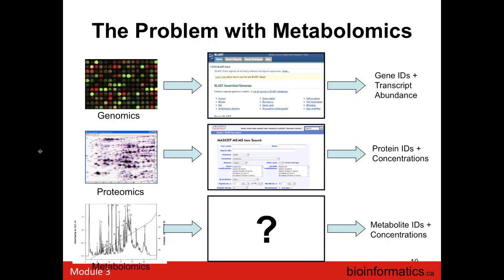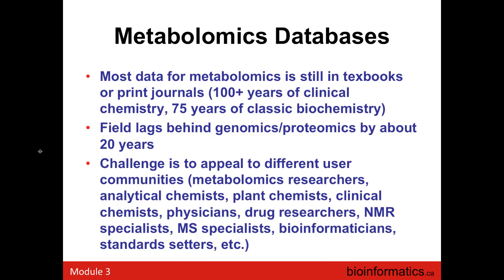Databases used to be the primary bottleneck in metabolomics. There were search tools for genomics and proteomics, but historically metabolomics didn't have those. About ten years ago, when we started looking at the state of affairs, almost all the metabolomics and metabolite data was actually in textbooks — and still is — because there's been more than 100 years of clinical chemistry and 75 years of classical biochemistry accumulated through textbooks and written journals. Even today, I would say metabolomics lags about 10 to 20 years behind other fields.